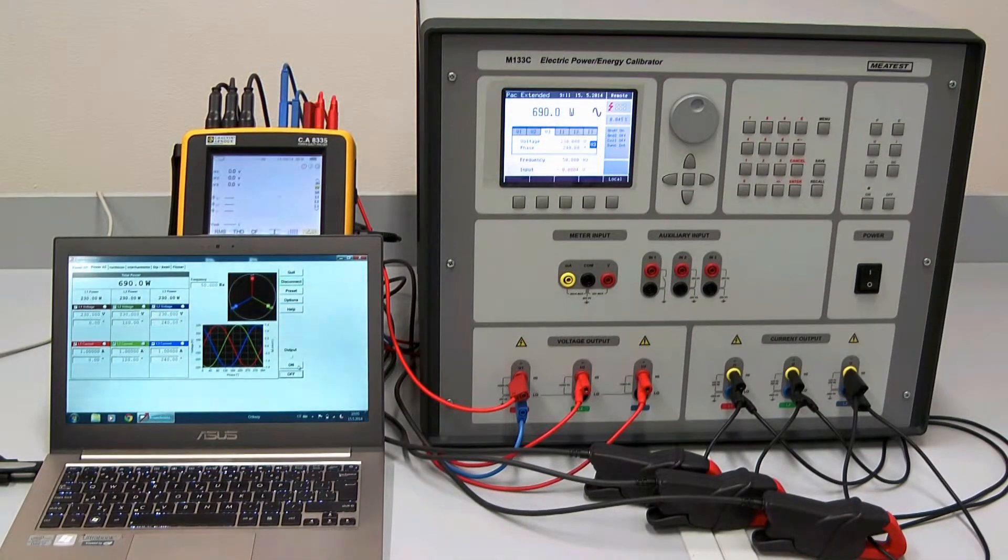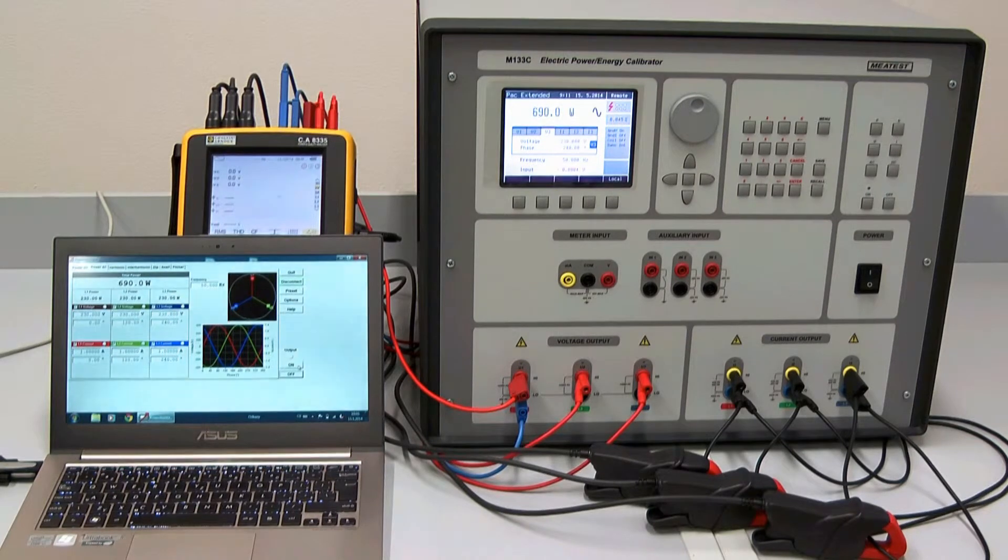Speaking of software, the M133C comes with free PC interface called Power Assistant. Using serial, GPIB or Ethernet, you can display phase diagrams and control the M133C conveniently from your computer.